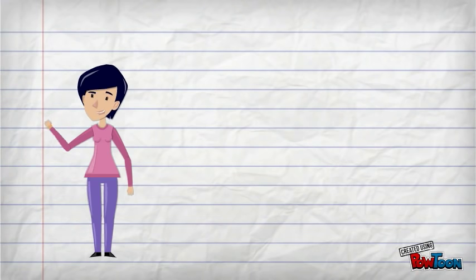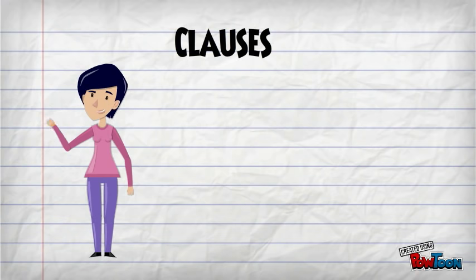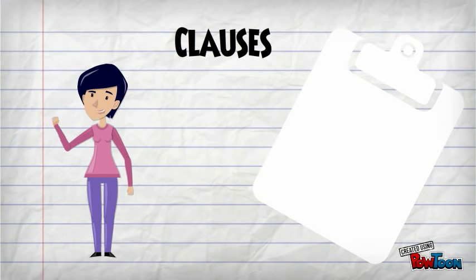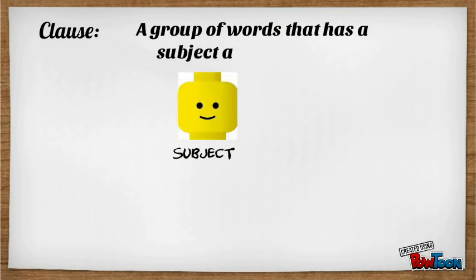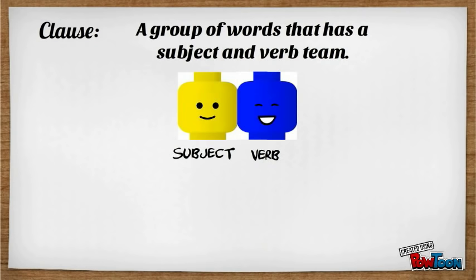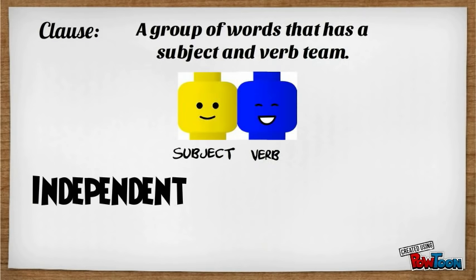Hi, everyone. Thanks for joining me to learn about clauses. Be sure to have your notes in front of you to fill in as you go along. A clause is a group of words that has a subject and verb team. There are two kinds of clauses: independent and dependent.